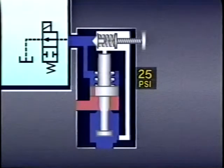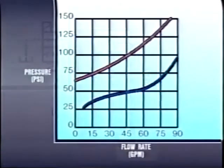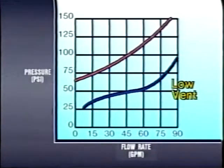The pressure at which the system unloads is determined by the tension pressure of the main valve's bias spring. A light tension spring offers little resistance to flow being returned to tank and is called a low vent spring. A high vent spring is a heavier spring that creates more resistance but will operate more quickly.